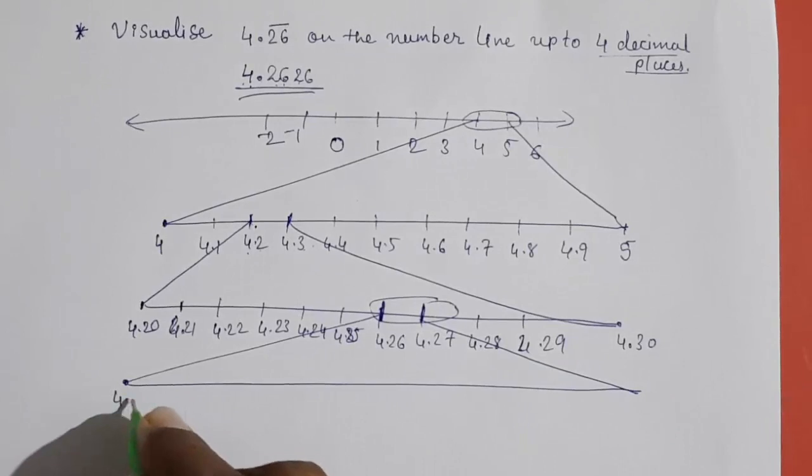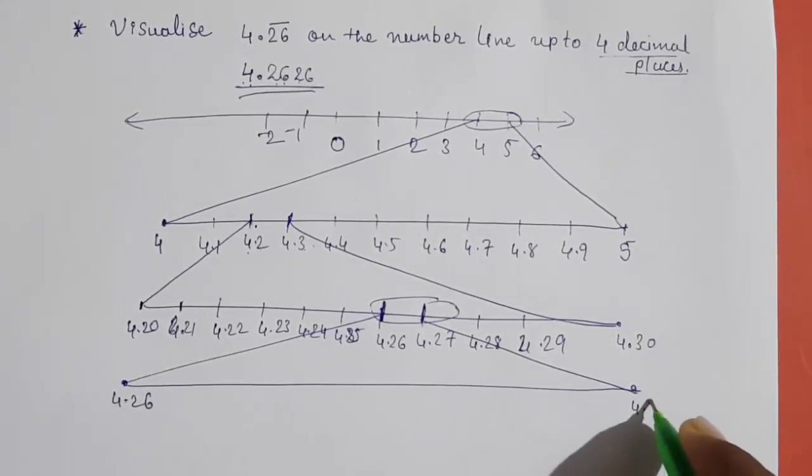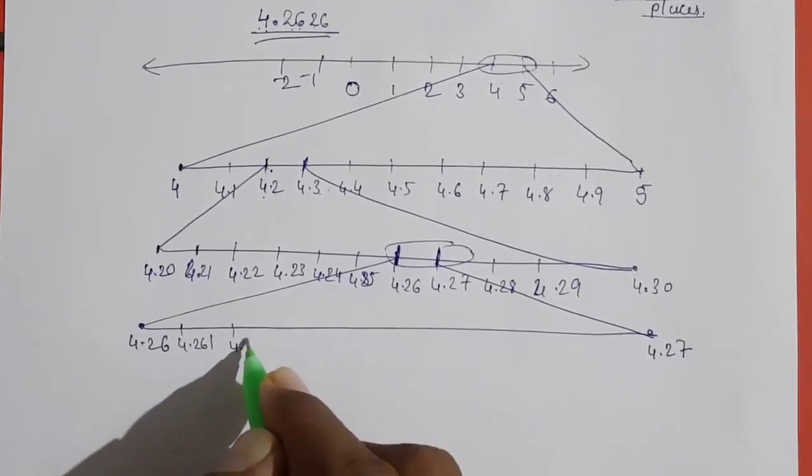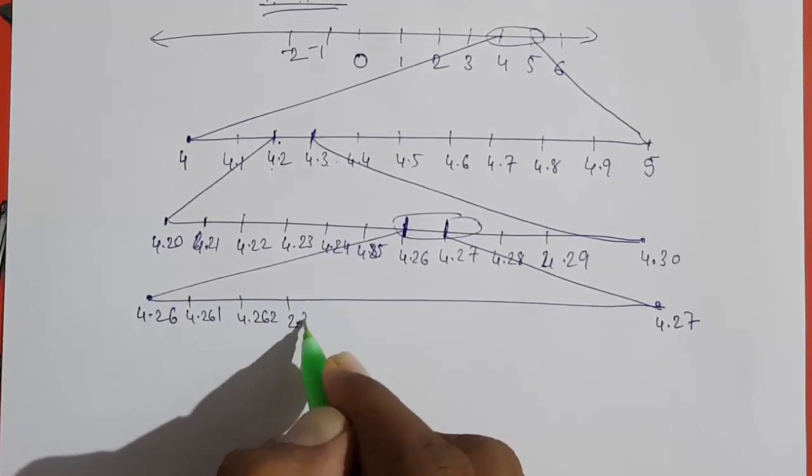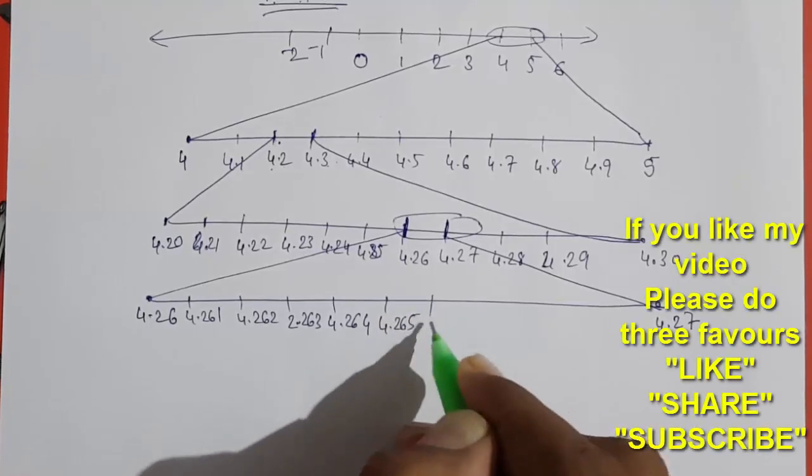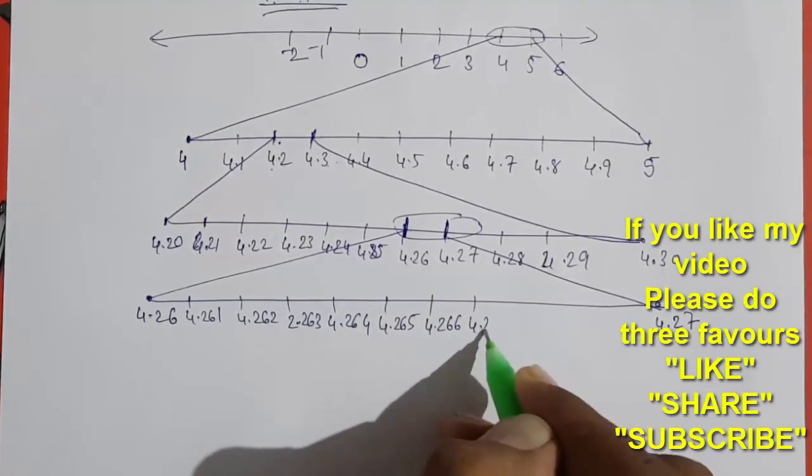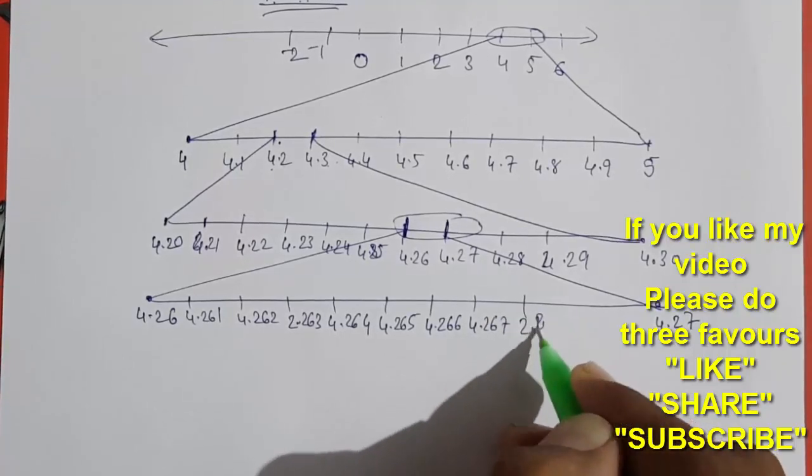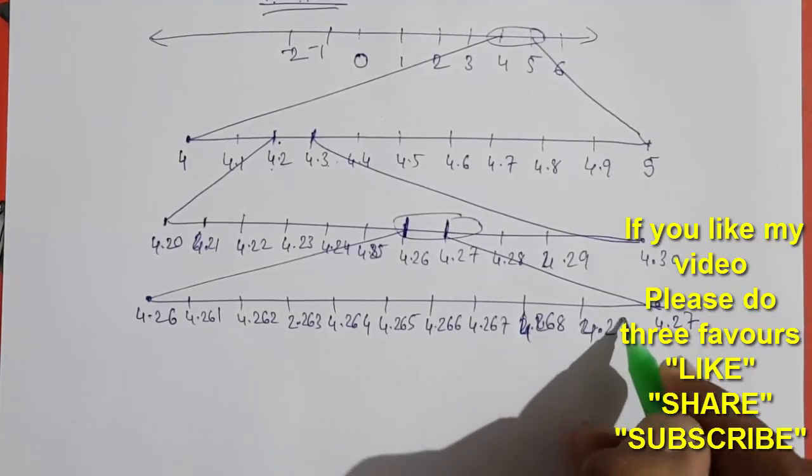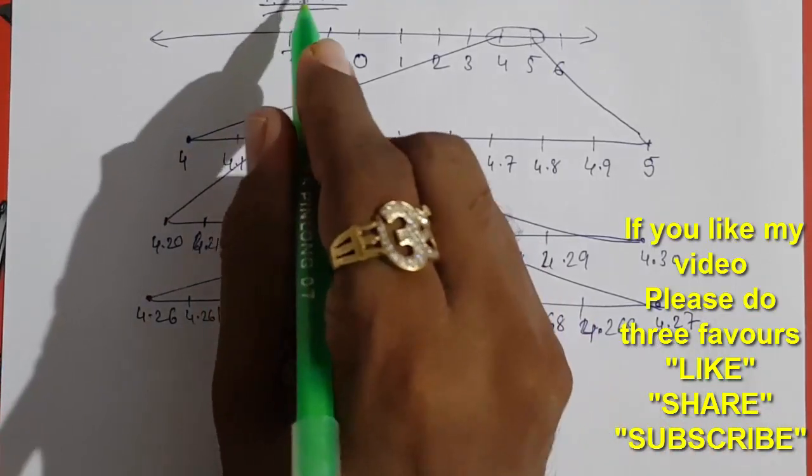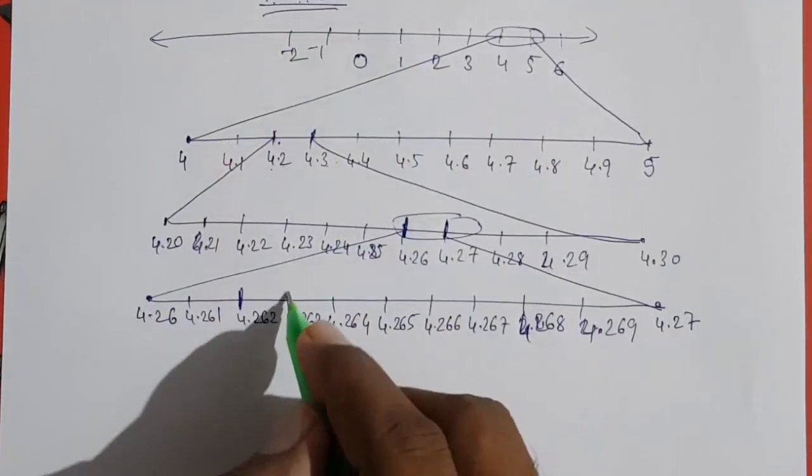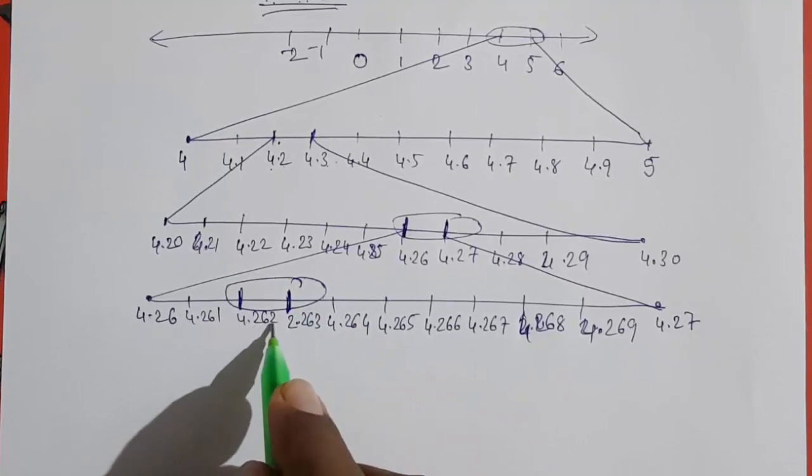Here it's 4.26 and here it's 4.27. Again: 4.261, 4.262, 4.263, 4.264, 4.265, 4.266, 4.267, 4.268, 4.269, and 4.270. Now it's 262, so we need 4.262, and then we want 6, so again we have to magnify 4.262 and 263.